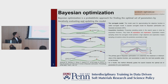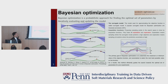First, I'd like to introduce Bayesian optimization. Bayesian optimization is a probabilistic approach for finding the optimal set of parameters by iteratively evaluating and updating the model. Bayesian optimization has two key components: the first one is the surrogate model, and the second one is the acquisition function. The surrogate model approximates the objective function based on previous data, and the acquisition function searches for the next sampling point based on the surrogate model's prediction.